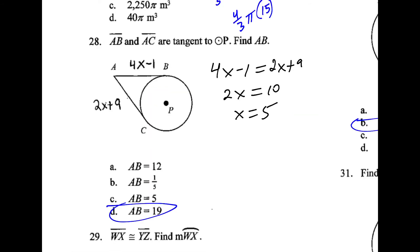With 28, this was actually supposed to be 2x plus 9. It just didn't come through in the copy very well. Because these are tangent, that means they are equivalent. So you set them equal to each other. You solve that x is equal to 5. If you plug that in, you get that ab is 19.